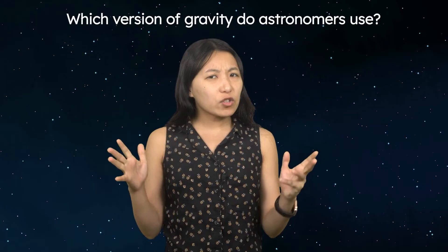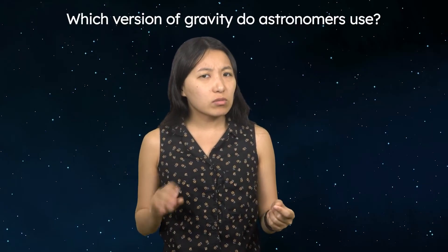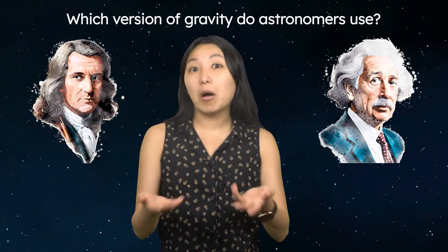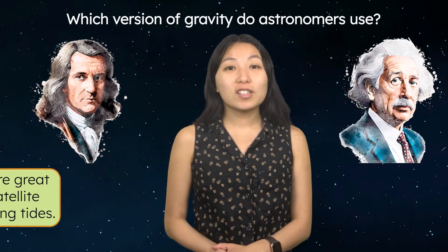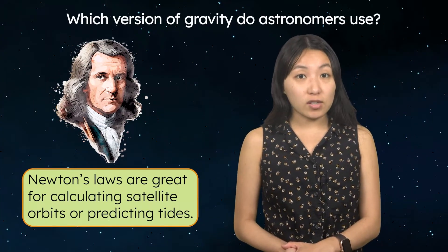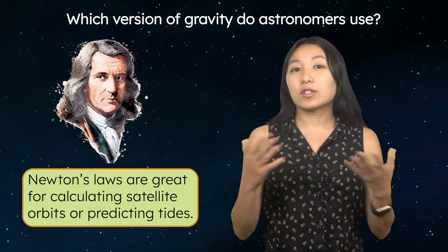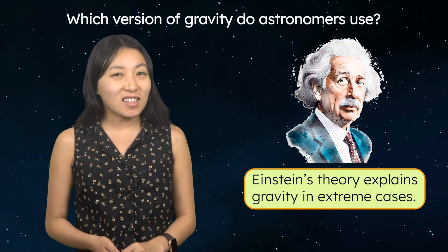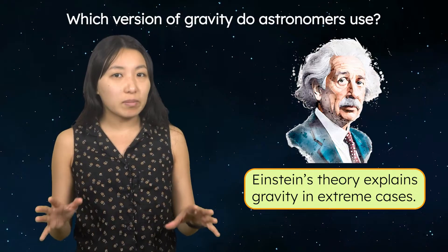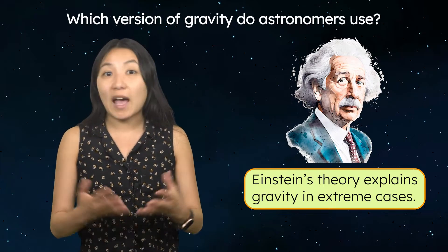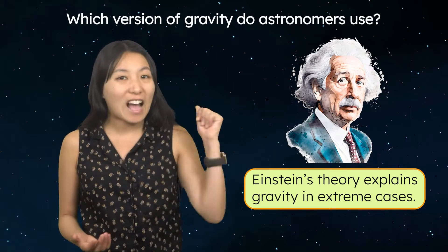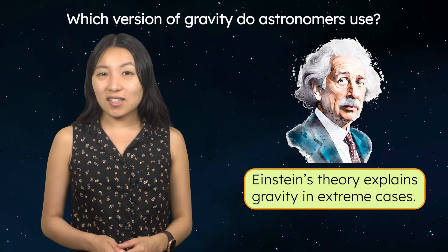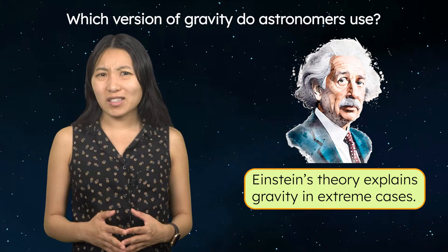So which version of gravity do astronomers use — Newton's or Einstein's? Well, both, actually. Newton's laws are great for everyday situations, like calculating satellite orbits or predicting tides. But Einstein's theory explains gravity in extreme cases, like near black holes, massive stars, or at high speeds. Let's take a closer look at Einstein's theory and see how it explains Mercury's puzzling orbit.